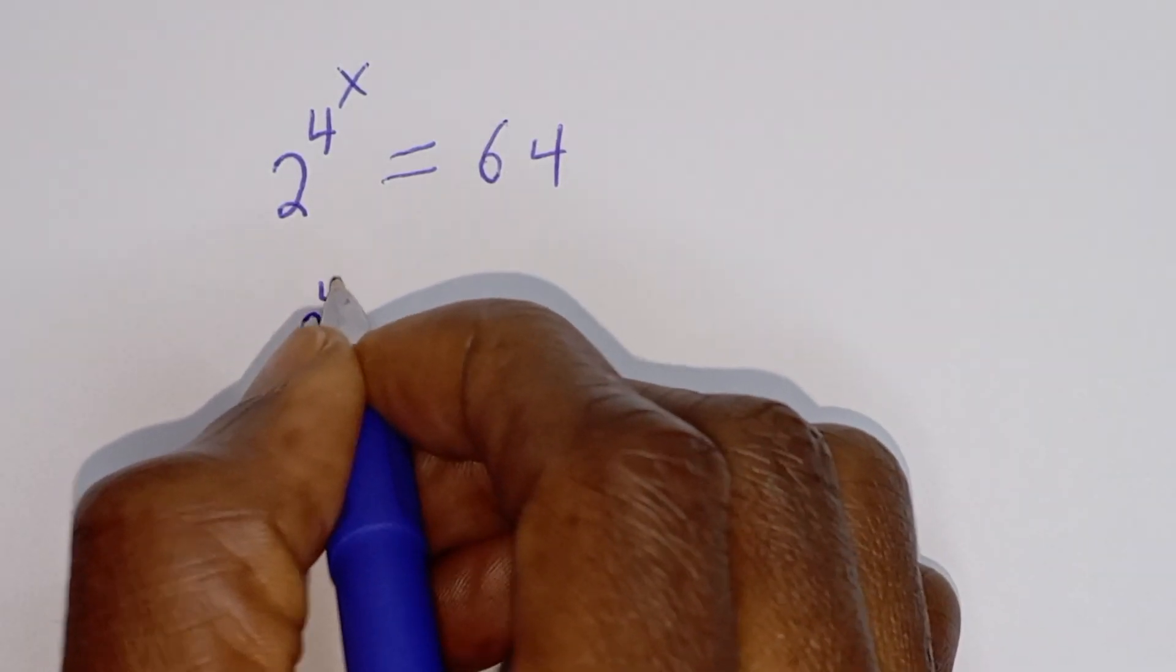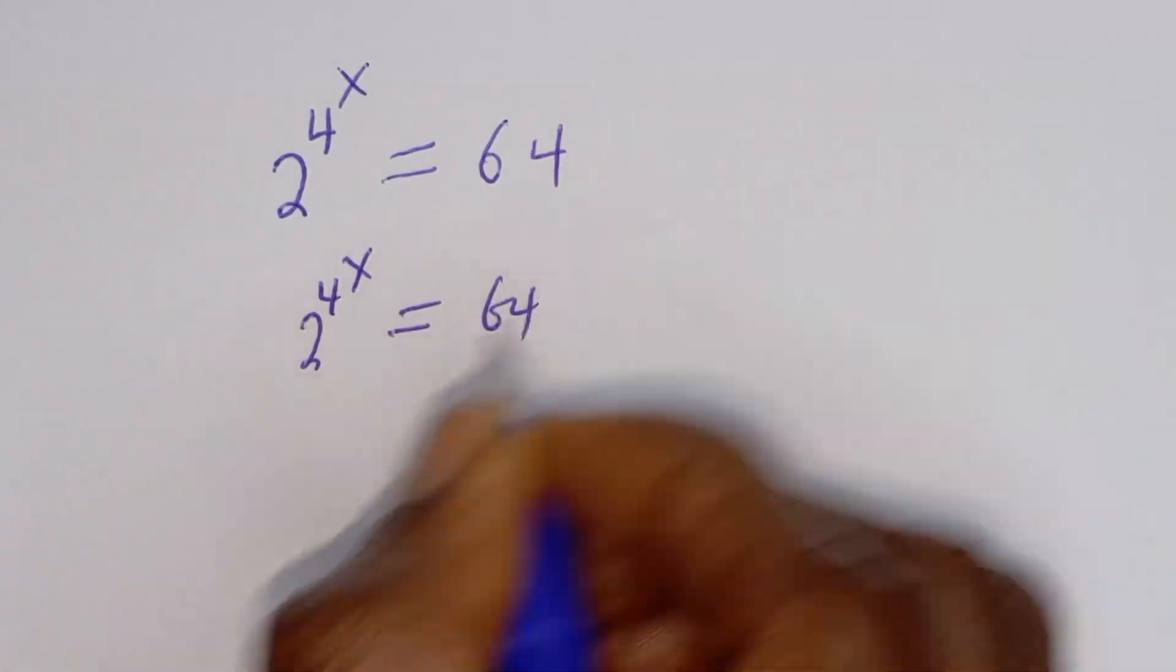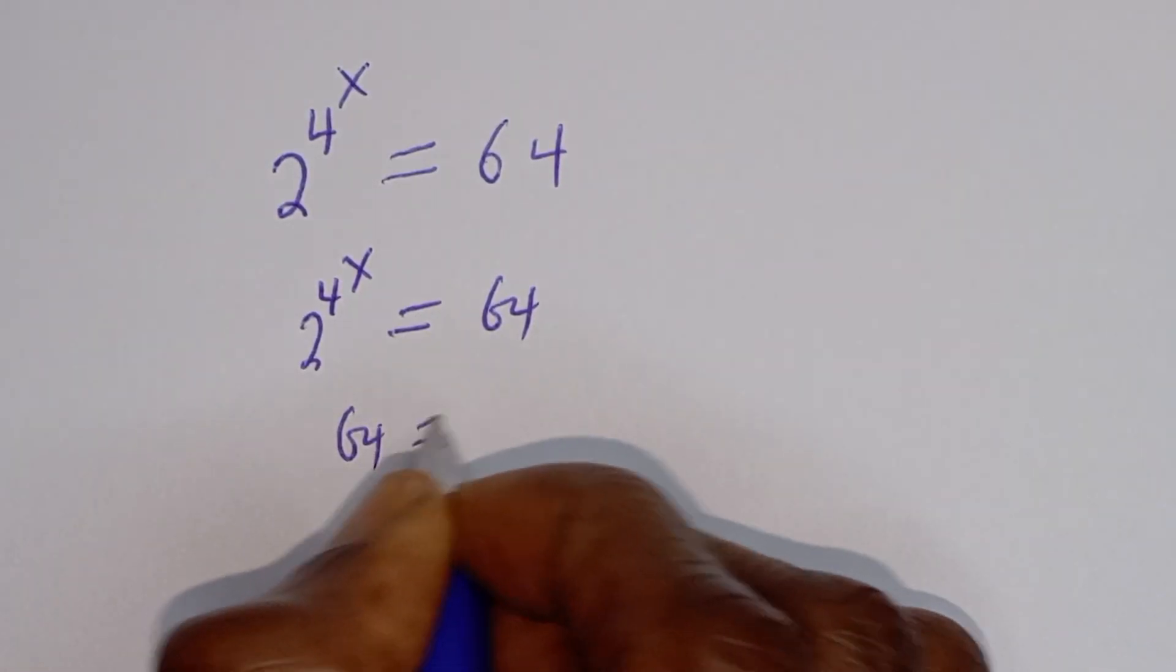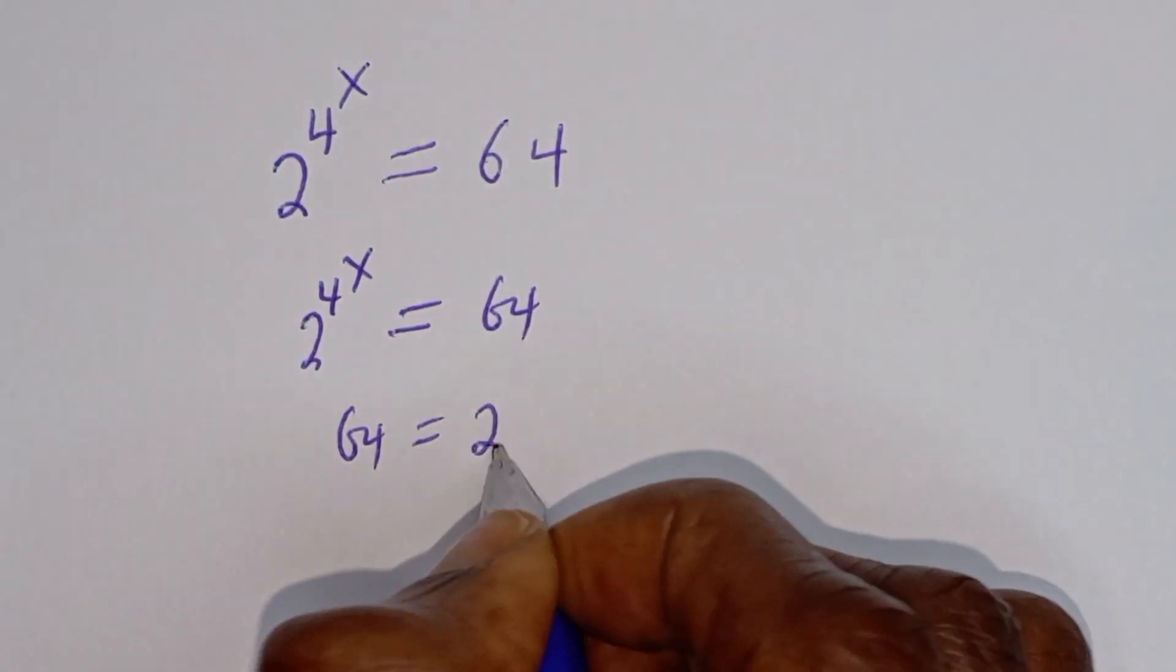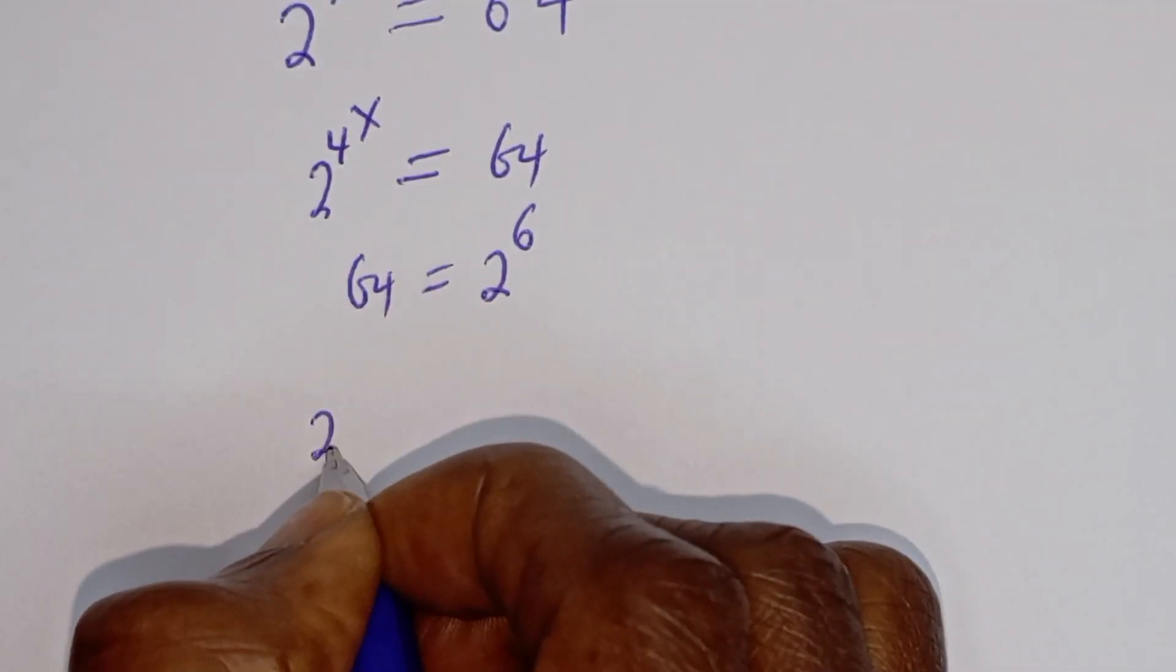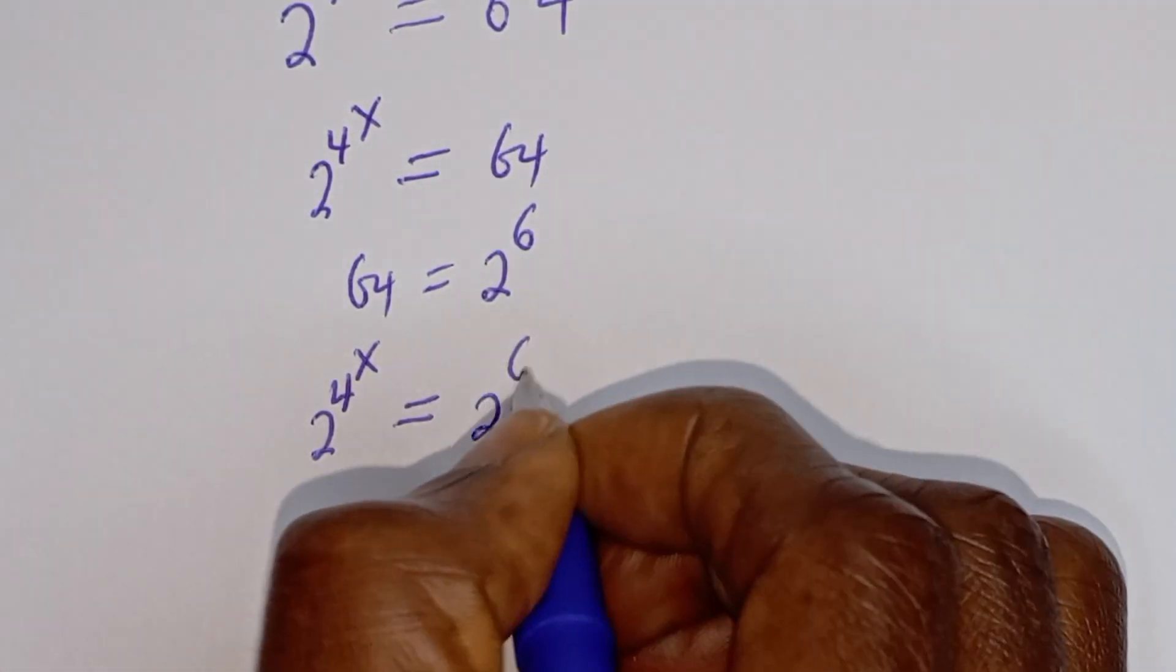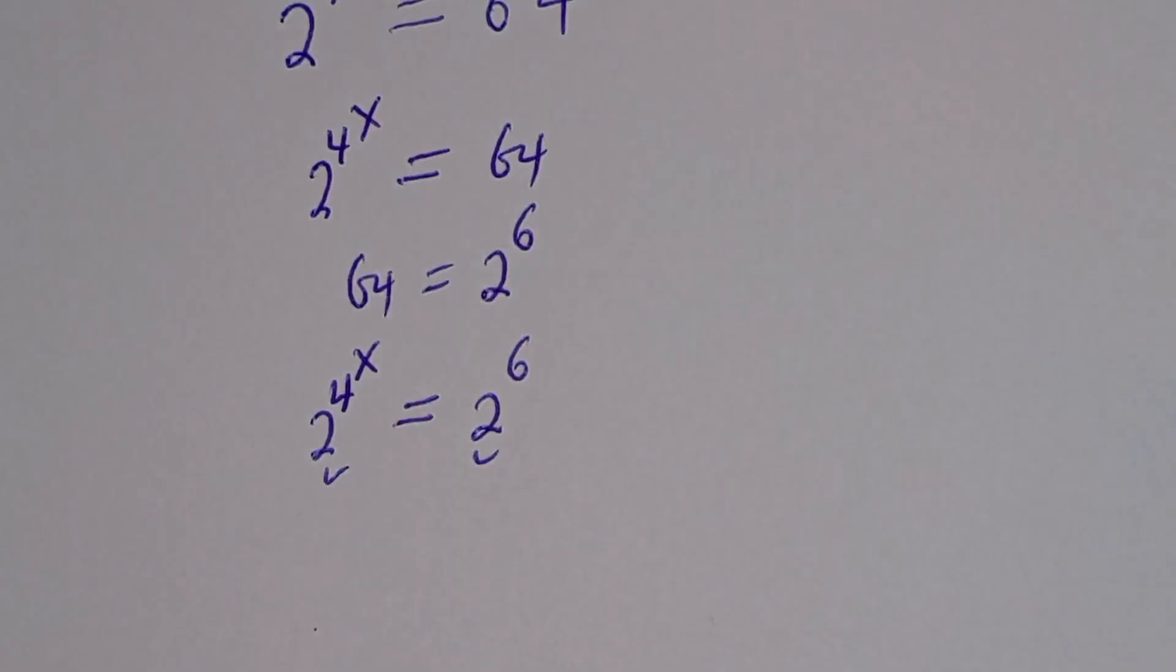2 to the power of 4 to the power of s is equal to 64. And 64 is equal to 2 raised to power 6. This is 2 to the power of 4 to the power of s is equal to 2 to the power of 6. They have the same base 2.